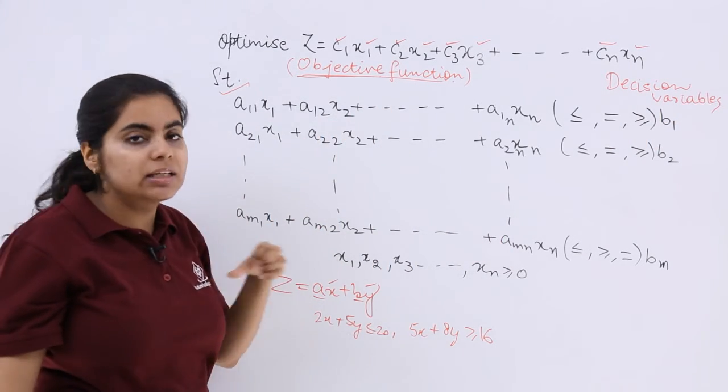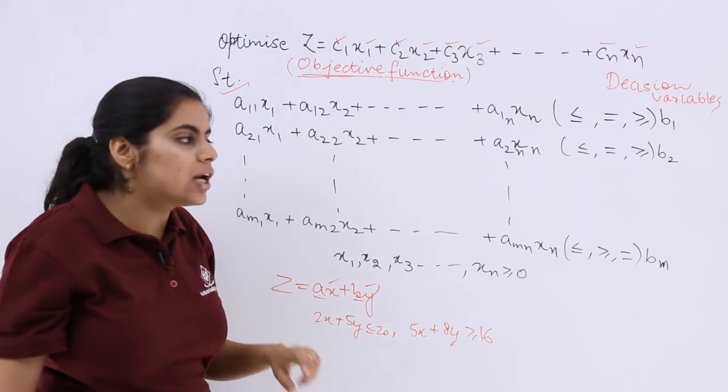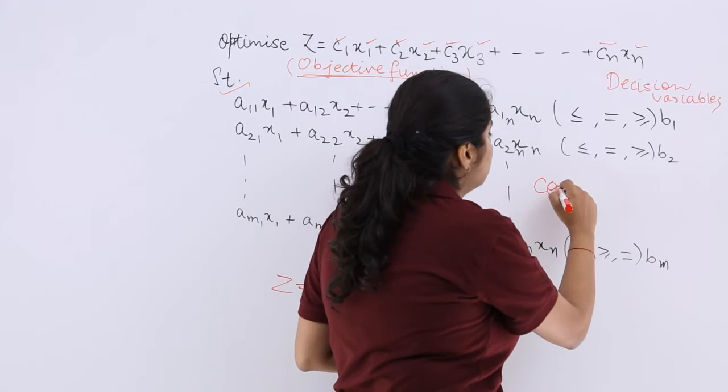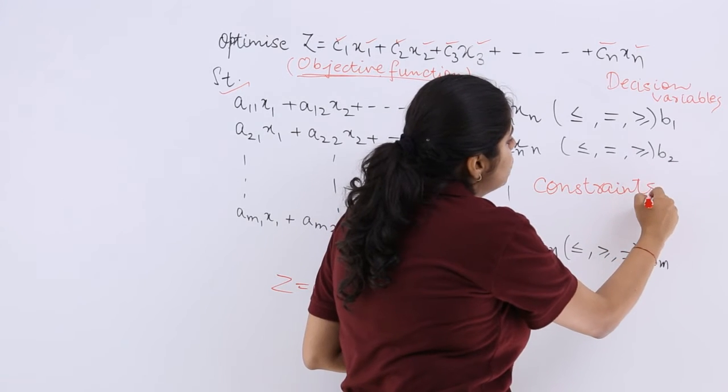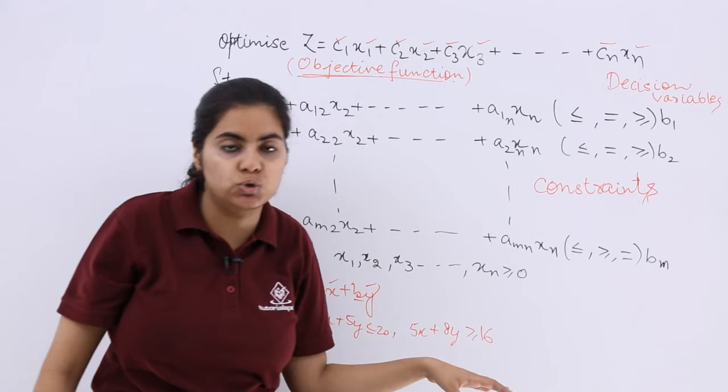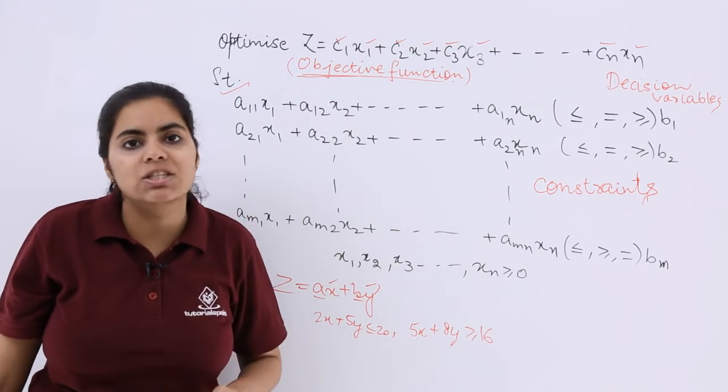Now these are the conditions, and these conditions are known as constraints because these conditions impose some restrictions and we cannot directly proceed towards our solution. So these are called constraints.